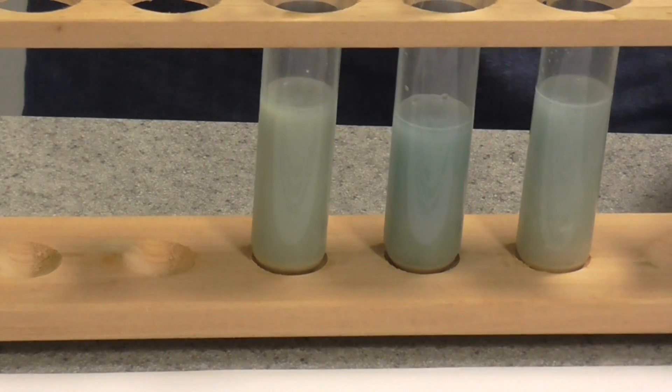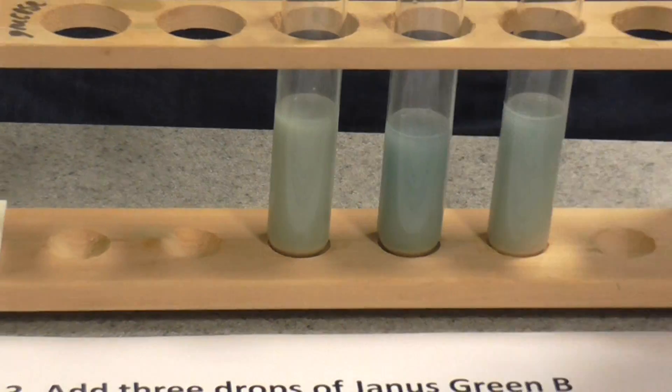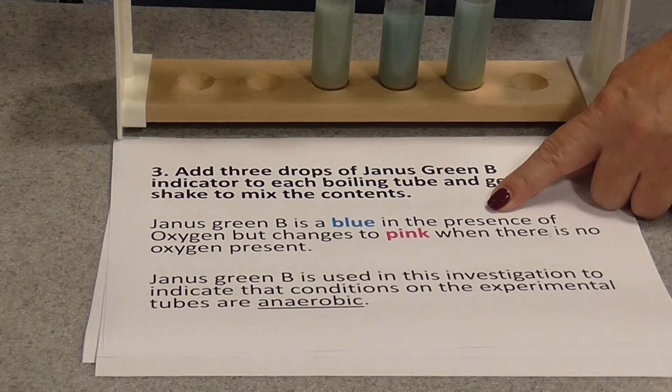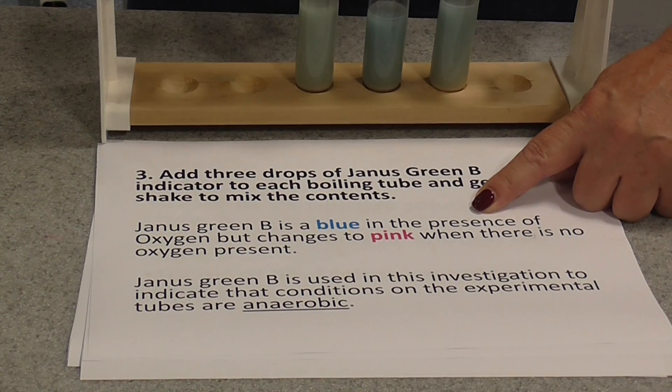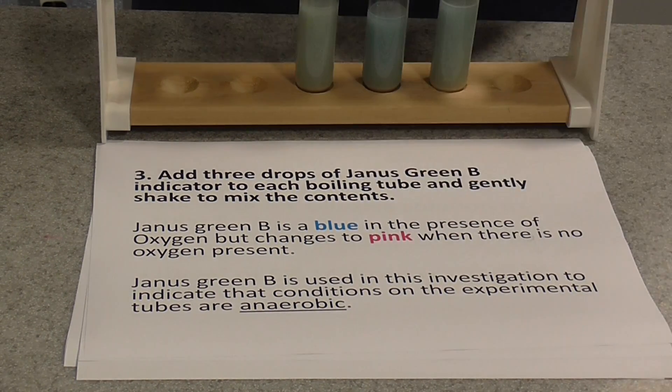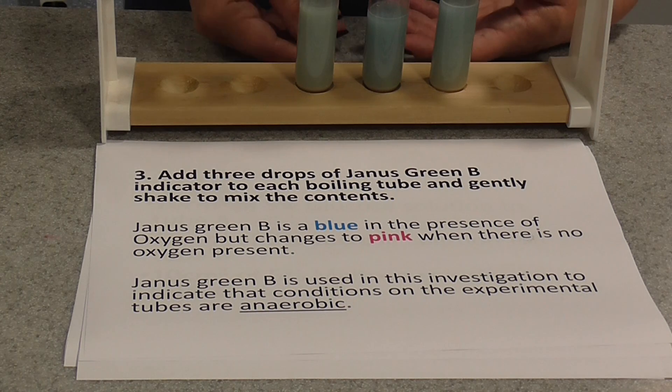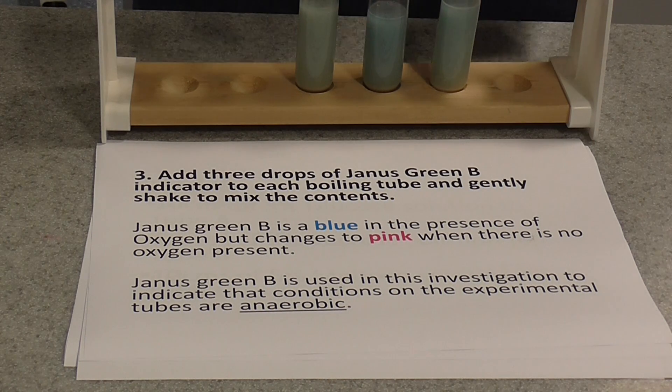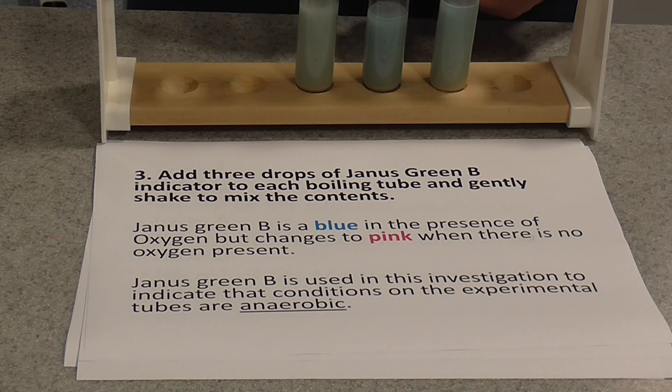Now Janus Green is an indicator which is blue in the presence of oxygen, but it changes to pink if there is no oxygen present. So we're going to use Janus Green in this investigation so that we know when conditions in our tubes are anaerobic, and then we'll be actually recording the rate of anaerobic respiration in the yeast.